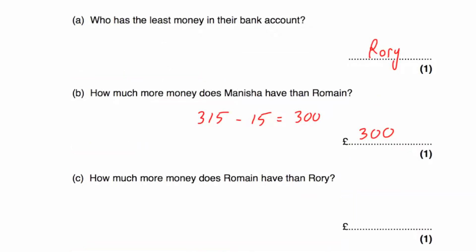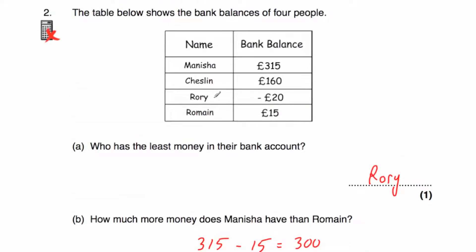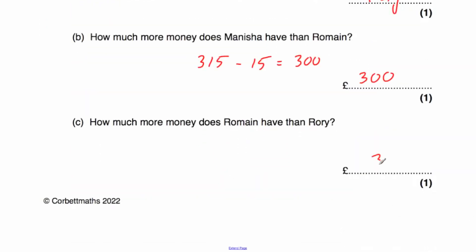Part C says how much more money does Romain have than Rory? Rory has a bank balance of negative £20, so he owes the bank £20, and Romain has £15. To get from negative 20 to 15, we add 20 to get to 0, then add another 15 to get to 15. So 20 plus 15 is 35 — Romain has £35 more than Rory.